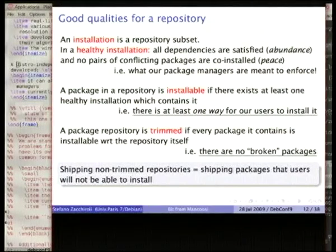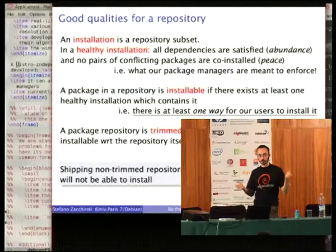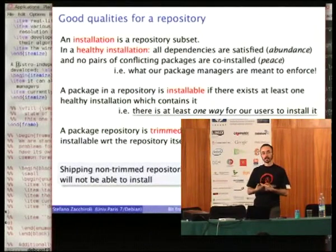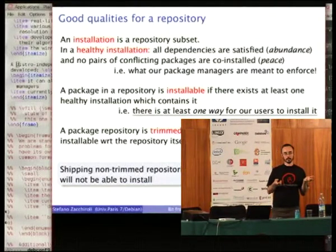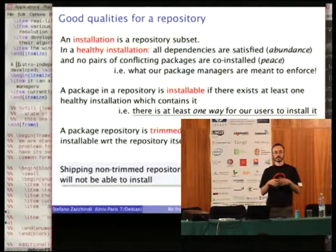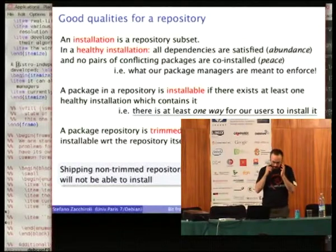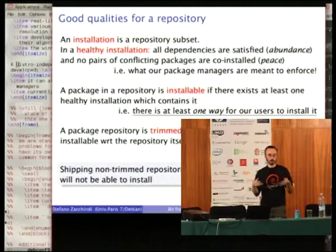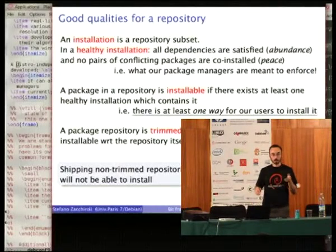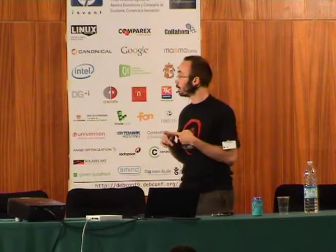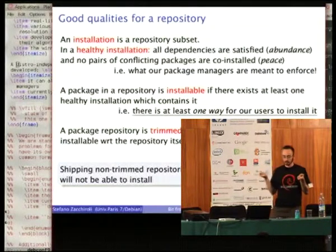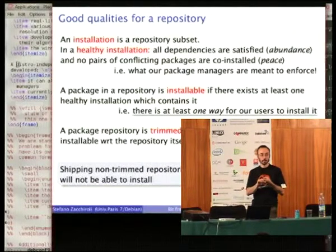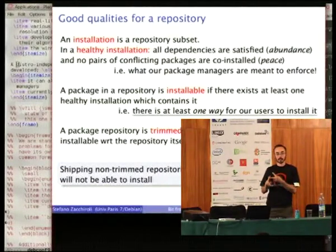Where does quality assurance come from all this? You basically start looking at a repository — a set of packages — and start thinking about good properties of that repository. What does a user see of a repository? They see their own installation, their package status, which is usually a subset of the packages coming from the repository. We say that this installation is healthy — it's in good shape — if basically dependencies are satisfied. What does it mean for dependencies to be satisfied? It means two things: first, all packages which are installed have their dependencies installed, and we have called that abundancy. And also, you require that all packages are at peace — there are no two packages installed which are in mutual conflict.